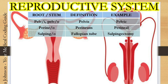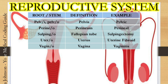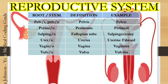The next one is salpingo — salpingo means fallopian tube. Example: salpingectomy, which means surgical excision of the fallopian tubes. The next one is utero — utero means uterus. Example: uterine fibroid, which means a fibroid of the uterus. The next one is vagino — vagino means vagina. Example: vaginitis, which means inflammation of the vagina. The next one is vulvo — vulvo means vulva. Example: vulvitis, which means inflammation of the vulva.